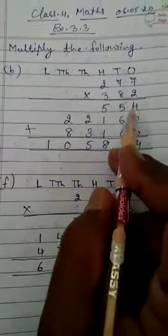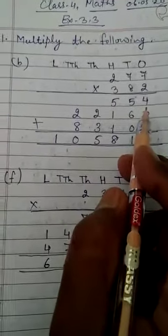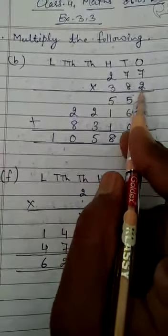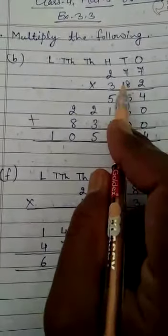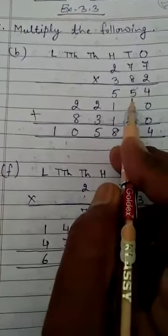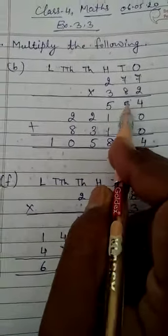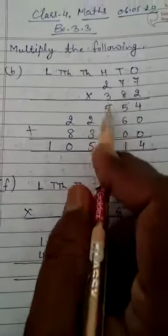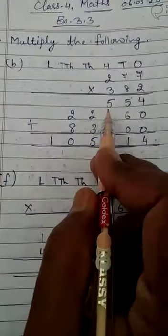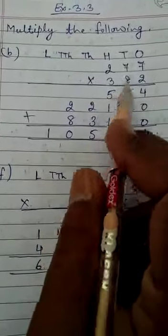So 2×7 is 14 — 4 we will write at ones place. Then 2×7 is 14 plus 1 carry is 15 — 5 we will write at tens place. Then 2×2 is 4 plus 1 carry is 5 — that we will write at hundreds place.